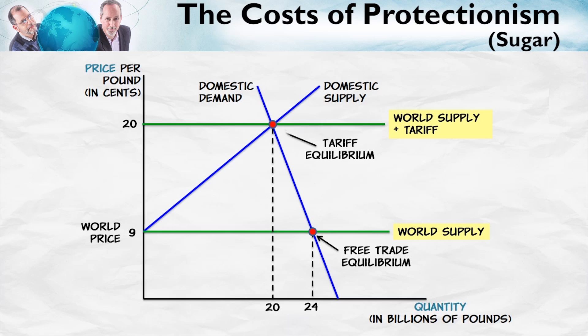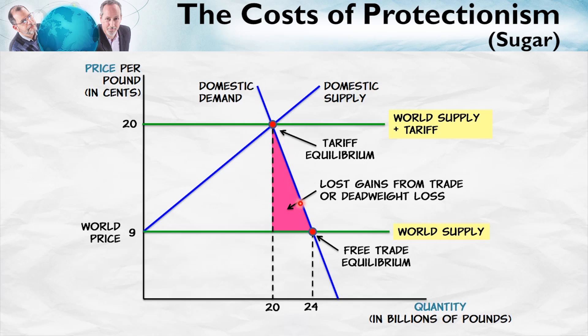So with this very high tariff, the entire domestic consumption is produced by domestic suppliers. Our tariff equilibrium is given by this point, and notice that domestic consumption is lower. What are the costs of the tariff? There are two.